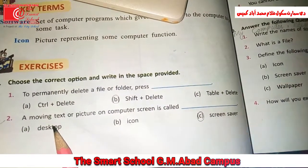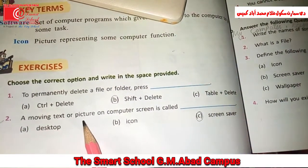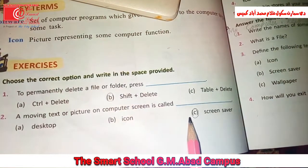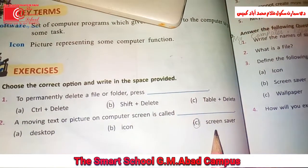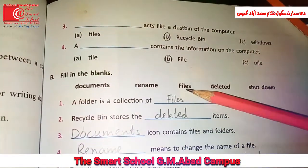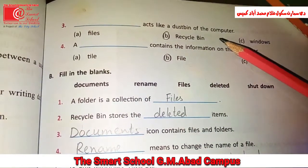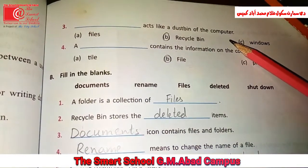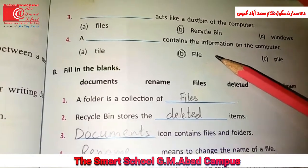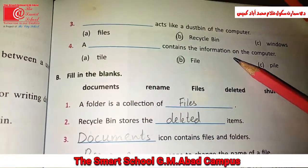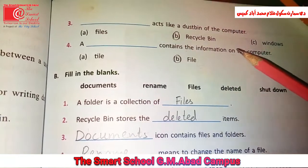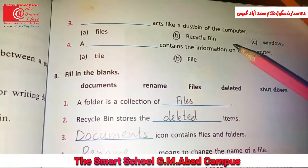A moving text or picture on a computer screen is called a screen saver. Recycle Bin acts like a dustbin of the computer. A file contains the information stored on the computer.